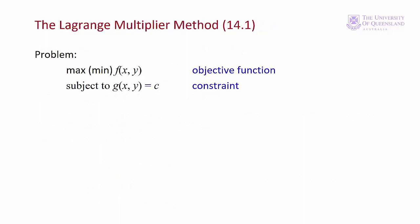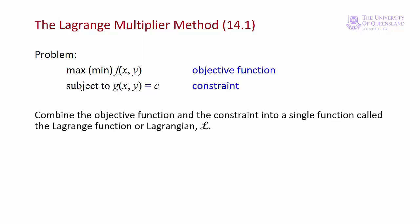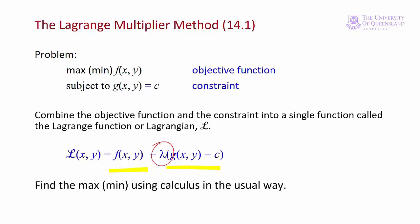The first thing we do is state the problem in mathematical terms — define the objective function and whether it's to be maximized or minimized, then state the constraint. The key to the Lagrange multiplier method is the next step: we form a new function that combines the objective function and the constraint, called the Lagrange function or the Lagrangian, represented by a curly L. Here we have a function of three variables x, y, and lambda, where lambda is the Lagrange multiplier. We find its value as well as the optimal values of x and y when we solve the problem, applying the multivariate optimization methods from lecture 7.